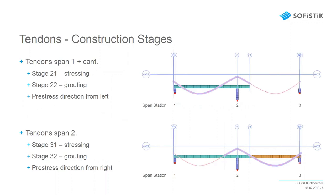Tendons also require stage information so the software knows when to activate, stress, grout, or remove them, and from which side they'll be stressed. For the first span, tendons are stressed from the left; for the second span, from the right. The second span tendons are stressed at stage 31 and grouted at stage 32.